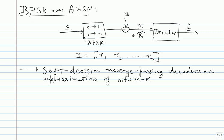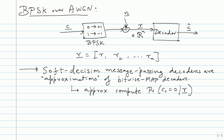These are approximations — you don't even know theoretically how good an approximation it is, but in practice in simulations it is very good, a reasonably good approximation in many cases. The message passing decoders try to approximately compute the probability that a particular bit equals 0 or 1 given the entire received vector R — that is the sense in which this is true.